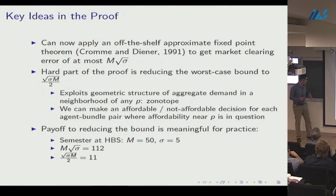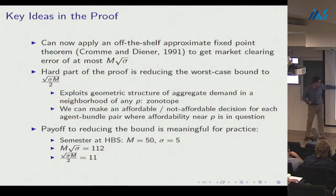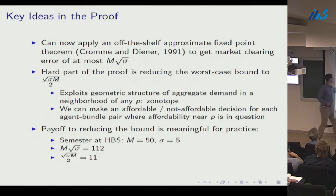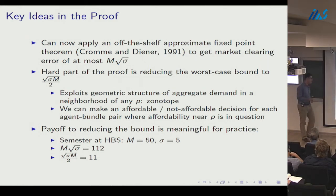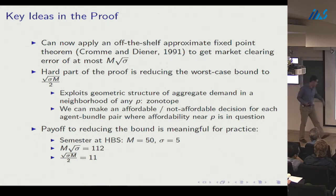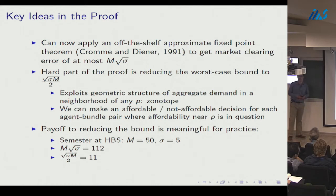Reducing the bound from m * root(sigma) to root(sigma * m / 2) matters for practice. In a semester at Harvard Business School, m equals 50 and sigma equals 5, so m * root(sigma) would give error 112, while root(sigma * m / 2) gives a worst-case error of 11.